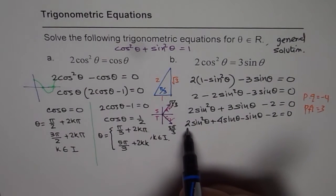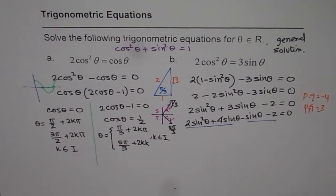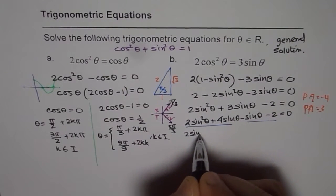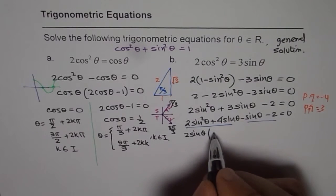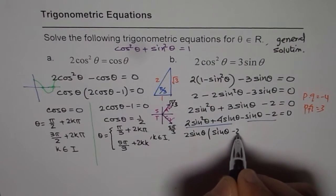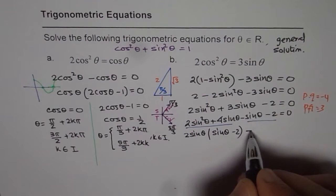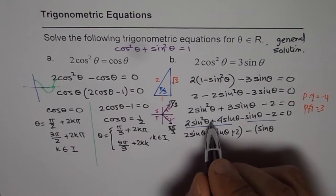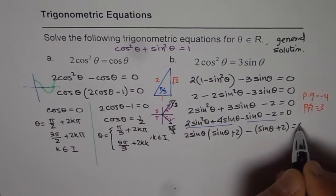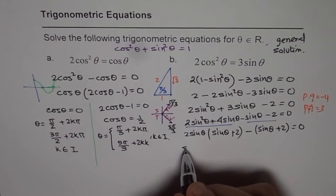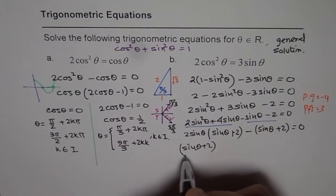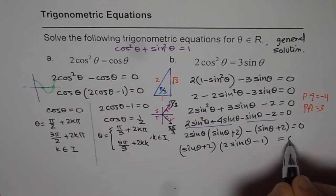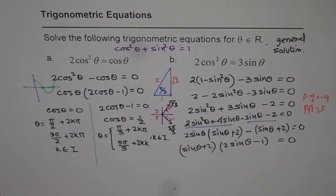Now we factor by grouping. Taking 2 sin theta common from the first pair gives 2 sin theta(sin theta + 2), and taking negative 1 common from the second pair gives minus 1(sin theta + 2). So the factored form is (sin theta + 2)(2 sin theta minus 1) equals 0.